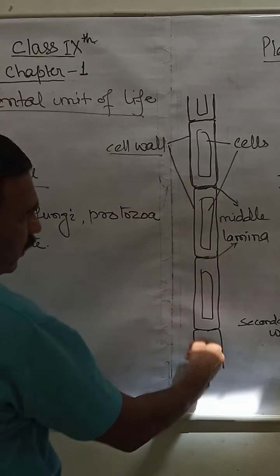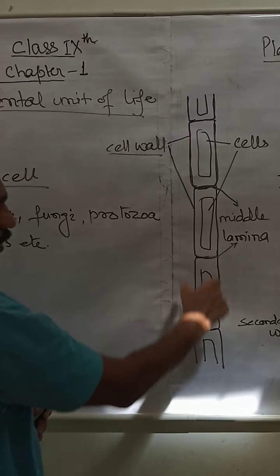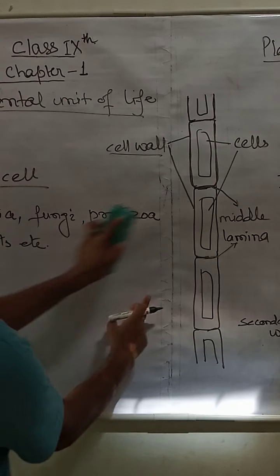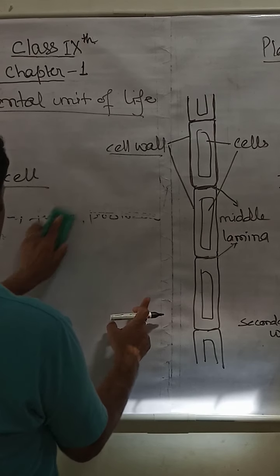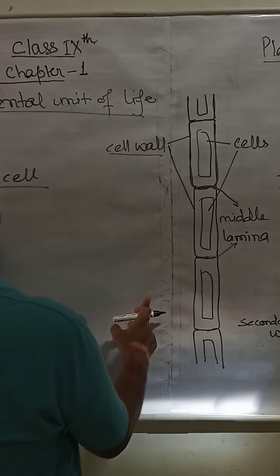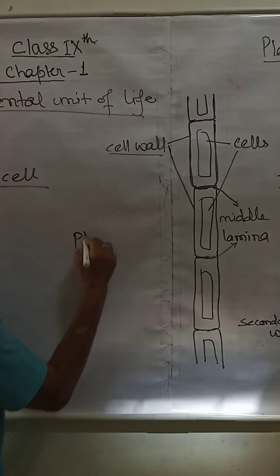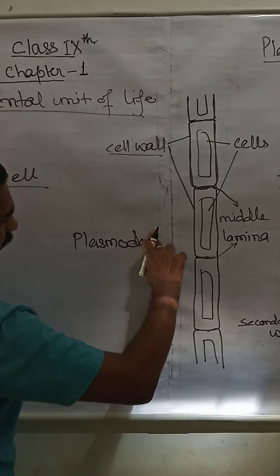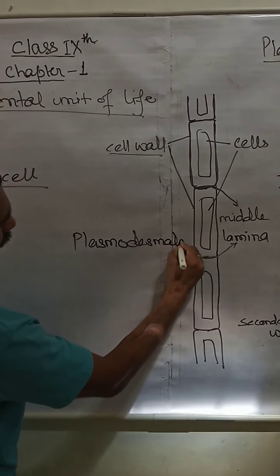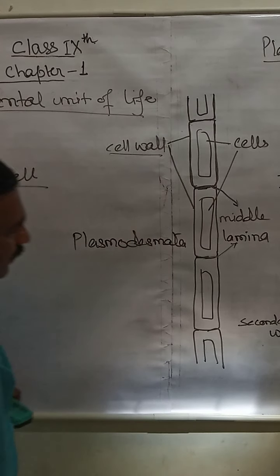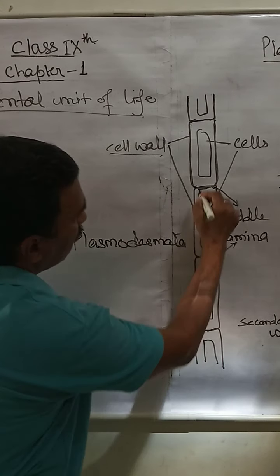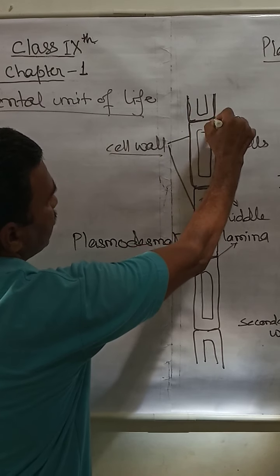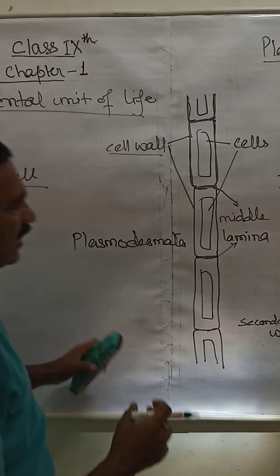The arrangement of plant cells one over the other is called Plasmodesmata. This word is not new — I have already mentioned Plasmodesmata before. In this structure, one cell is attached to another cell with a cementing material, and there are some perforations between them.